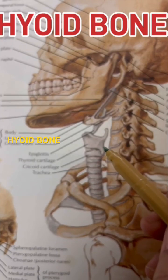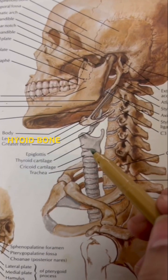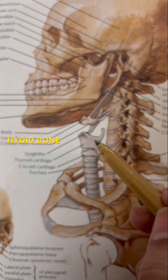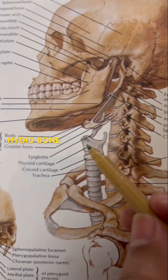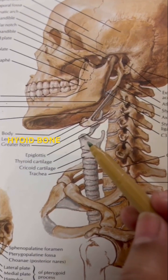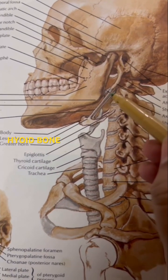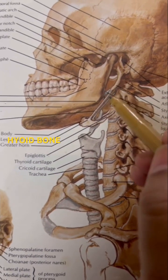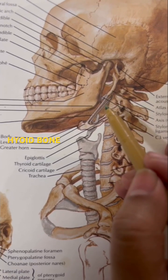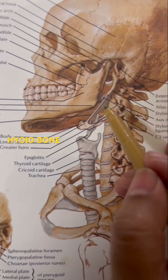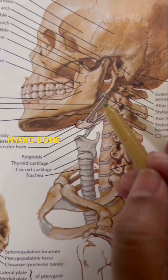It's the only bone in the body that is not attached to any other bone. Rather, it is suspended through ligaments — as you can see, the stylohyoid ligament. It is suspended through ligaments and muscles, and hence it is also called a free-floating bone.